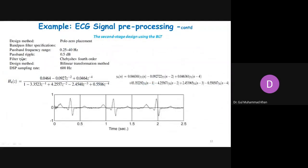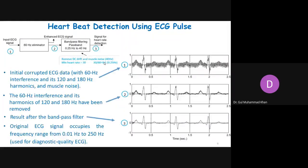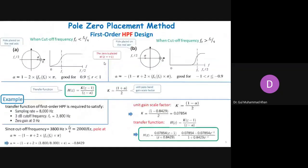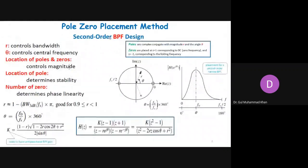In the second case, the passband ripple is assumed to be 0.5 dB. You can use a Chebyshev fourth-order filter or the bilinear transformation method. The best approach is to design it using both the formula and the pole-zero method and then compare the results, since the bandwidth range and sampling frequency are provided. Note that we only discussed the second-order band-pass filter using pole-zero method, so for a fourth-order filter you would need to place more poles.